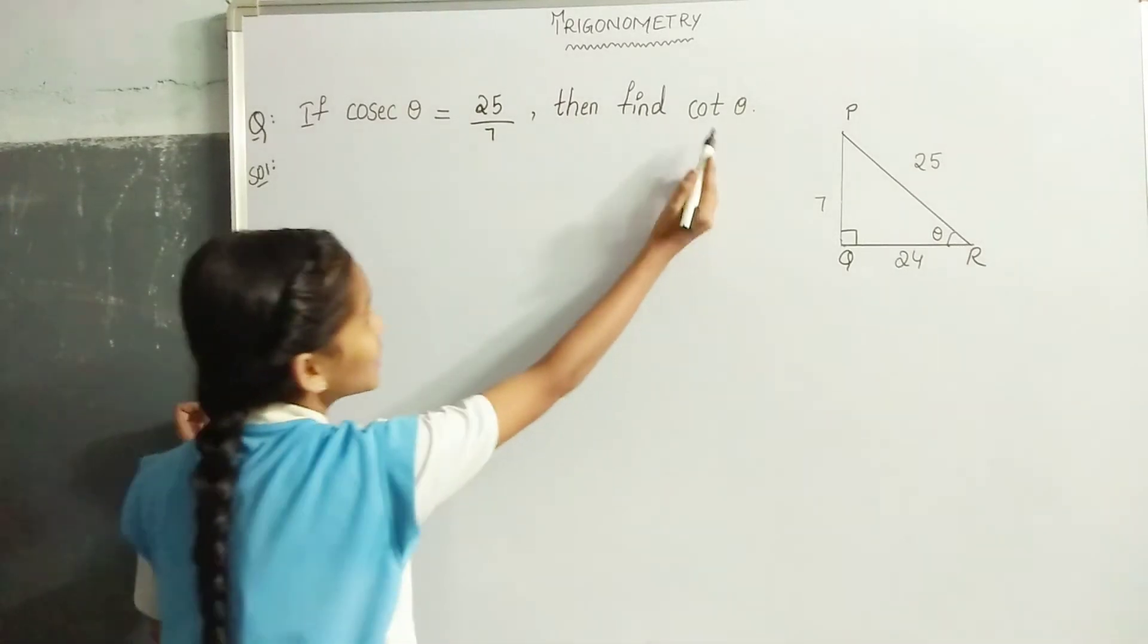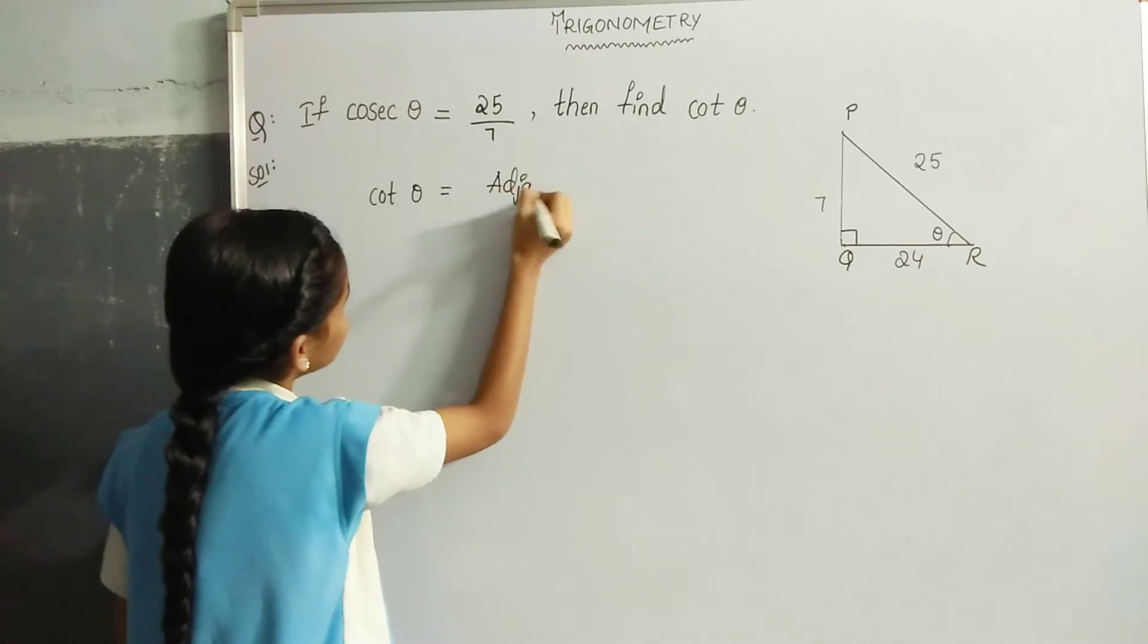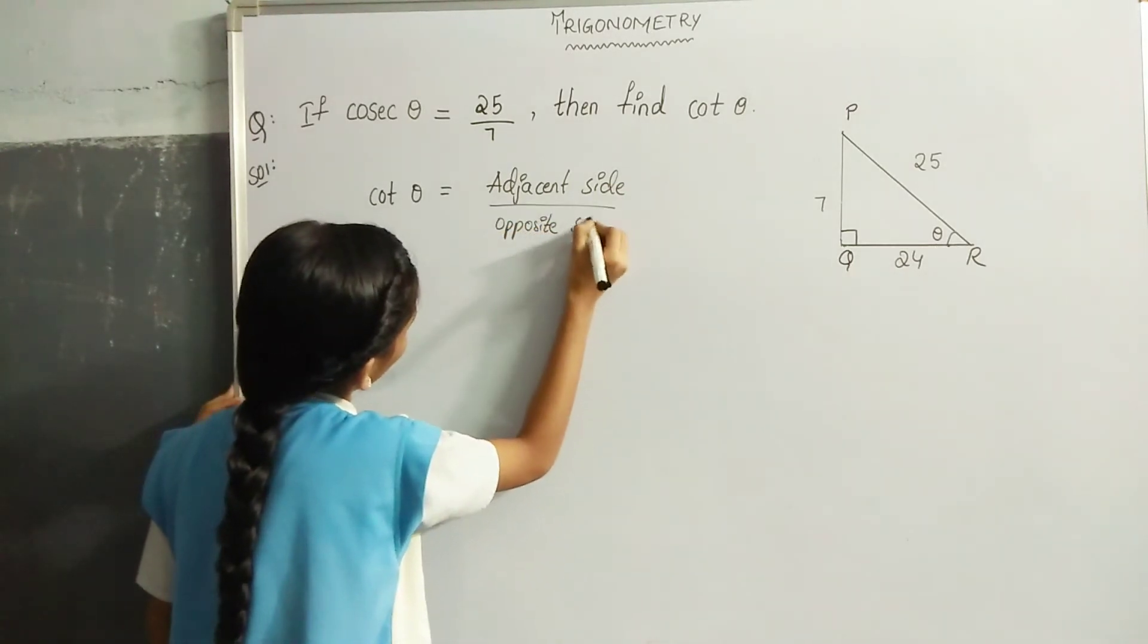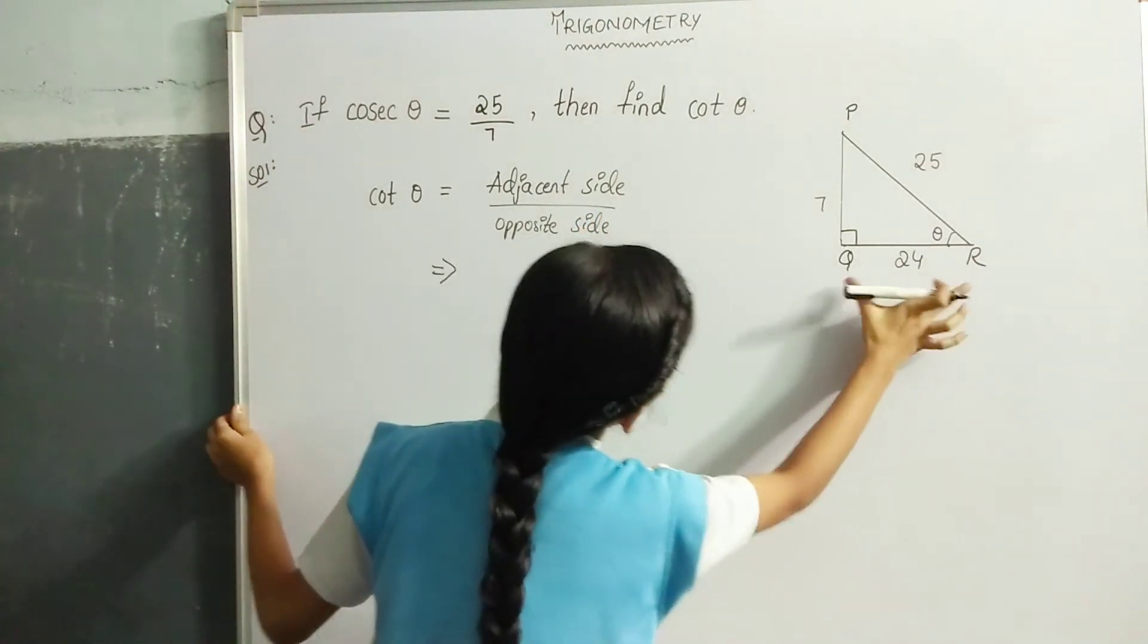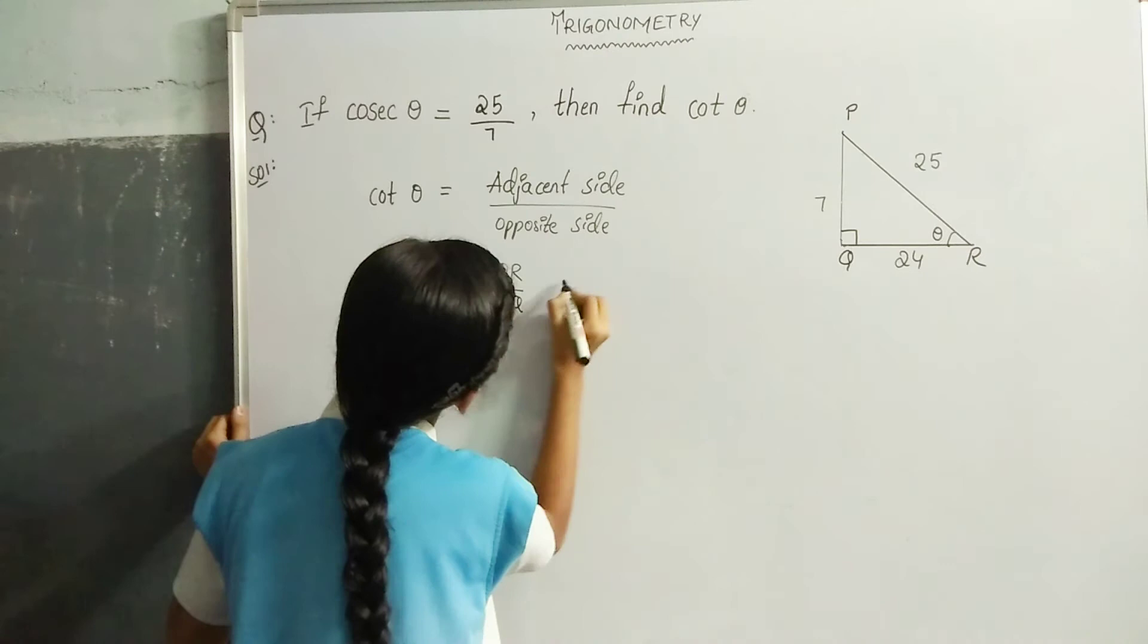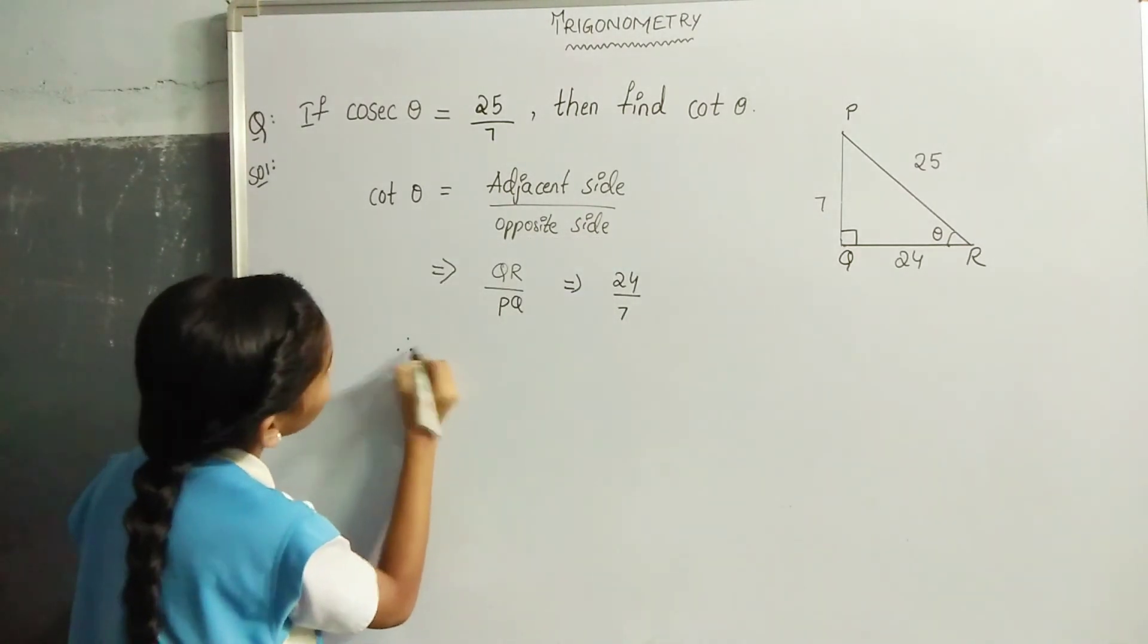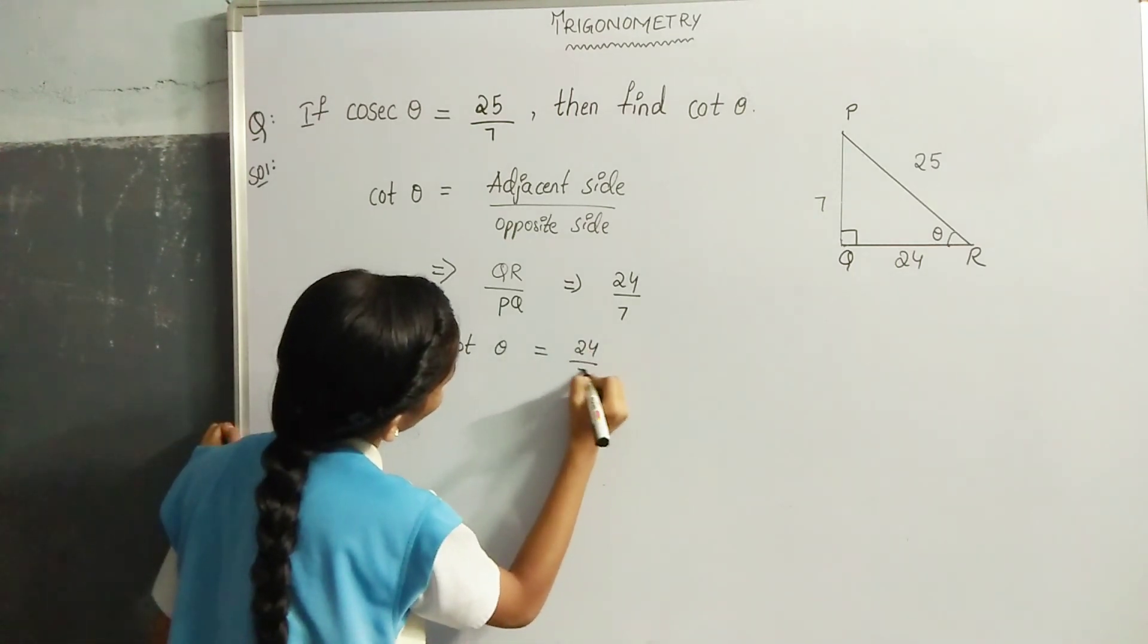We have to find cot theta value. Cot theta is equal to adjacent side by opposite side. That implies adjacent side is QR and the opposite side is TQ. QR is equal to 24 and TQ is equal to 7. Therefore, we got cot theta is equal to 24 by 7.